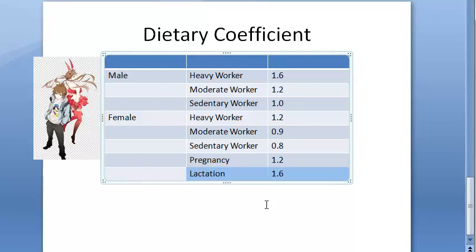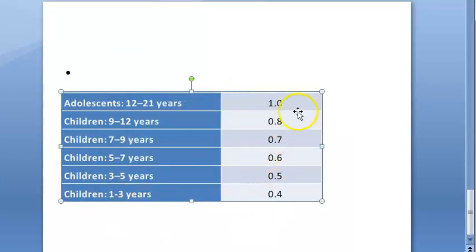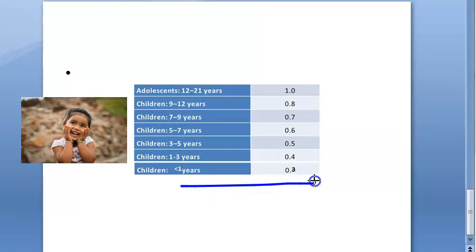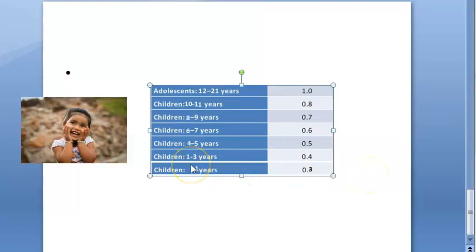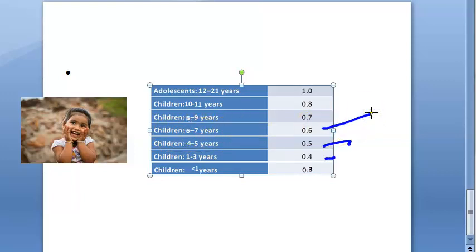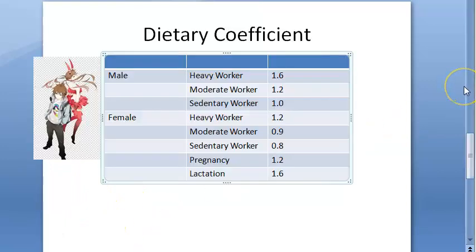For adolescents (12 to 21 years), the dietary coefficient is 1.0 — same as a male sedentary worker. For children: less than one year is 0.3, 1 to 3 years is 0.4, 4 to 5 years is 0.5, 6 to 7 years is 0.6, and it increases by 0.1 each age group up to 0.8.